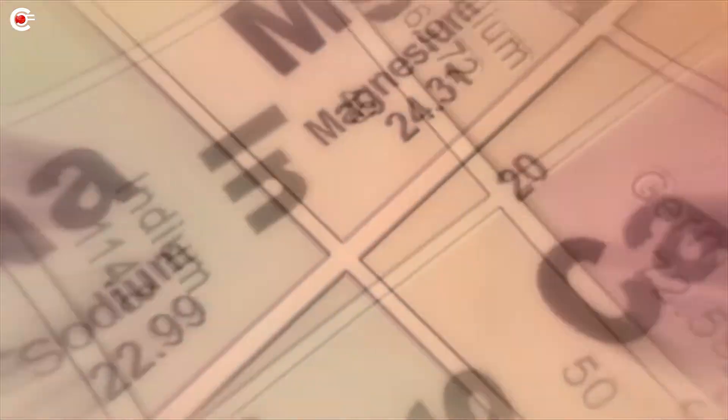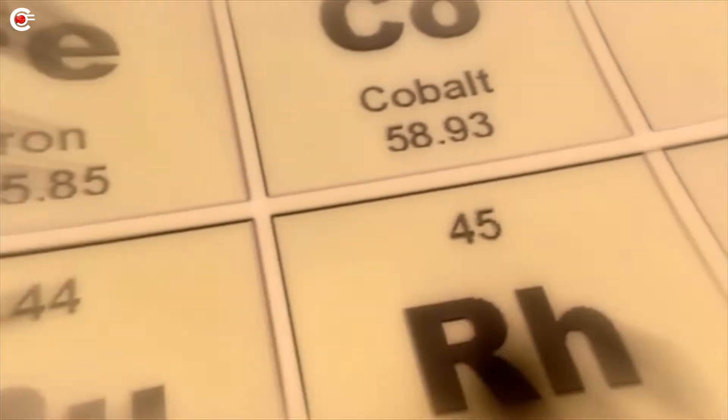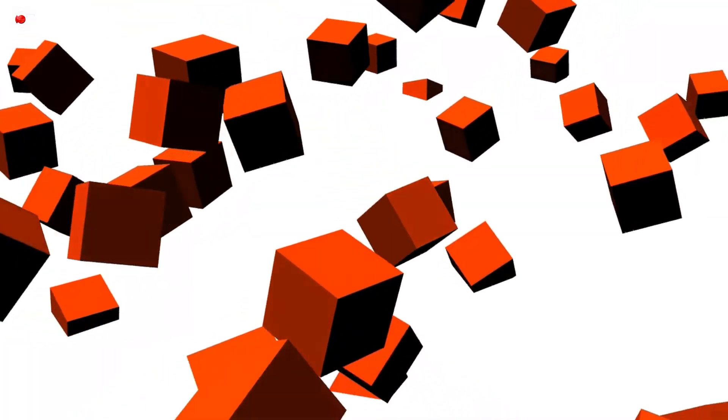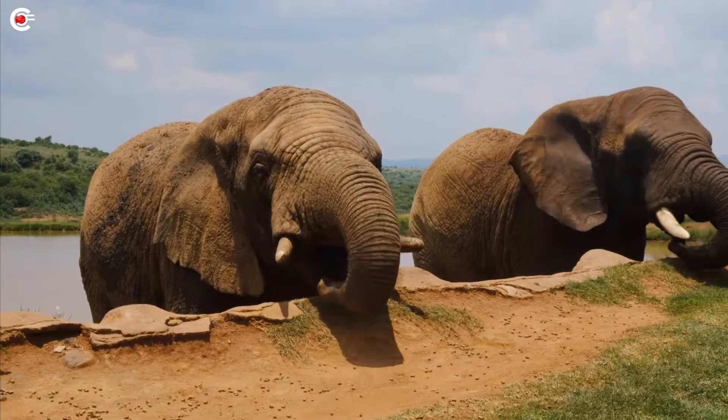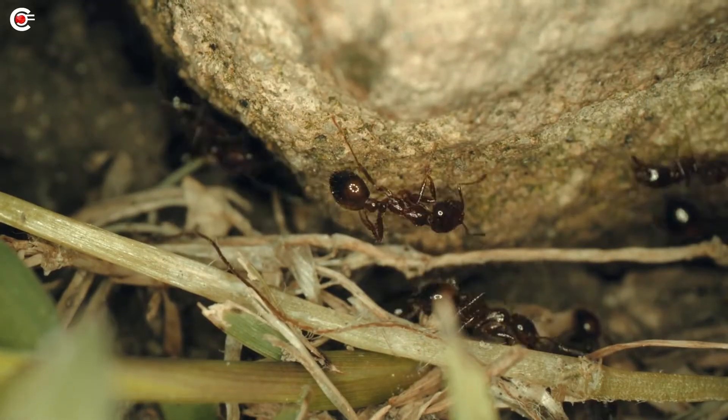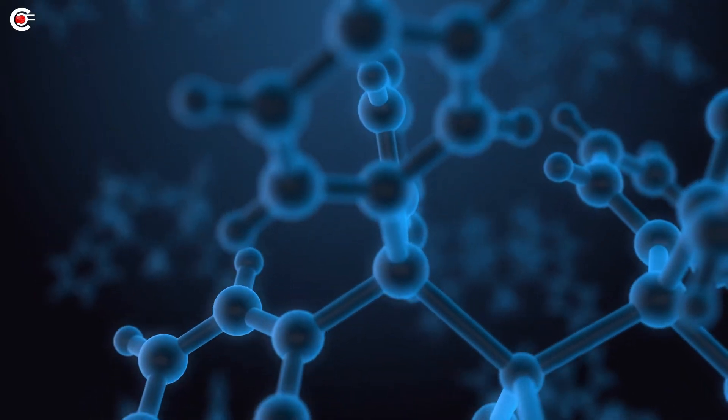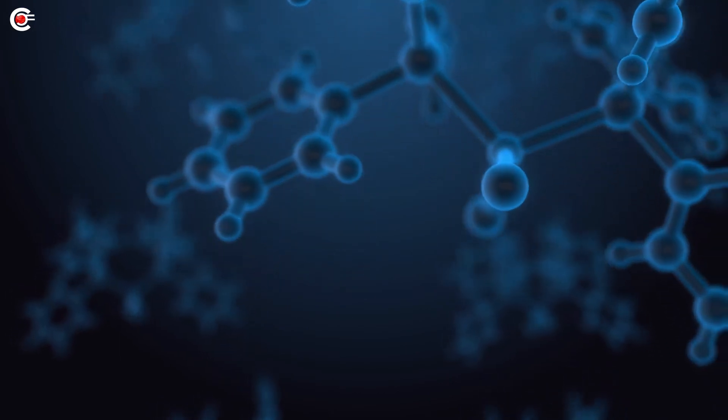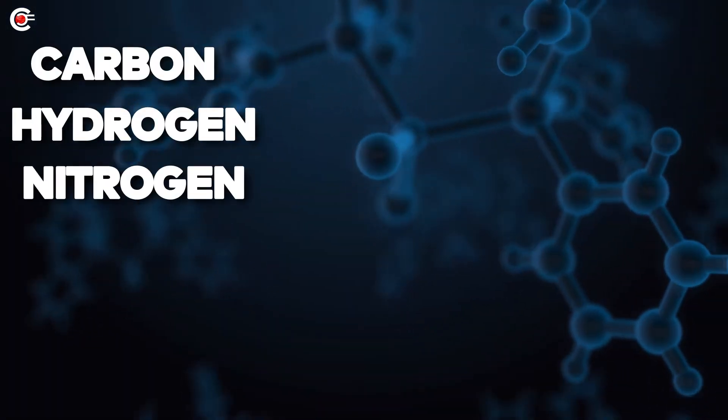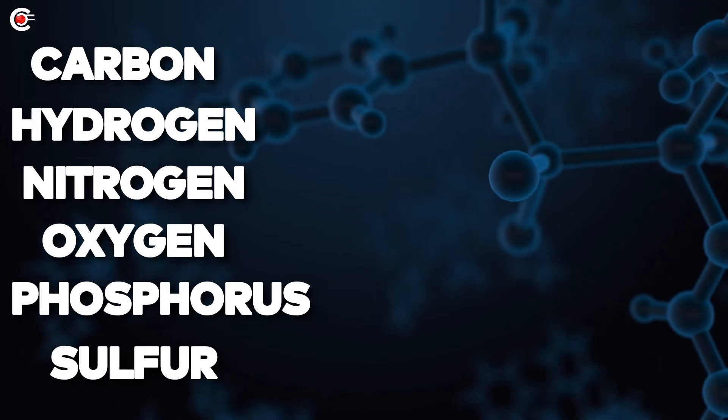Elements are the most important thing in the whole process because that is from what everything is made. If the building blocks were not present, then what's the point of all these perfect conditions? From the mightiest elephant to the smallest insect, almost every kind of living organism on Earth is built from the same six elements: Carbon, Hydrogen, Nitrogen, Oxygen, Phosphorus, and Sulfur.